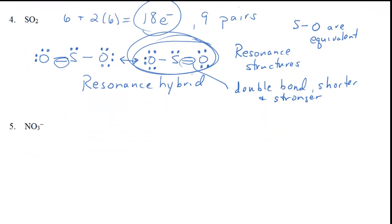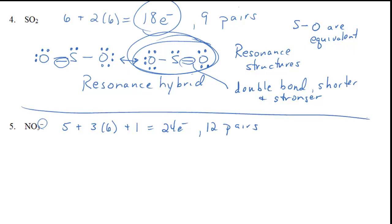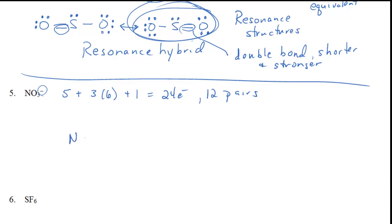Let's go to NO3- — the nitrate ion. Nitrogen is in group 5 or group 15: five valence electrons. Three oxygens each with six. That negative one charge indicates we have an extra electron, so we add one in — giving us 24 electrons or 12 pairs. Oxygen is the second most electronegative element, and nitrogen to the left of oxygen is less electronegative, so we put nitrogen in the center. Connect the three oxygens with single bonds and start with the outer atoms first, completing the octets with lone pairs.